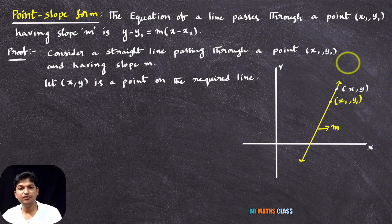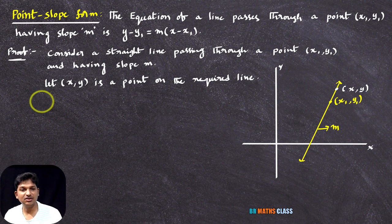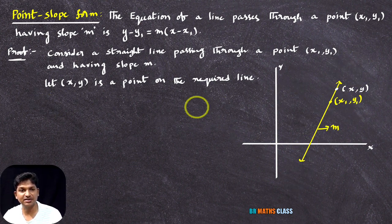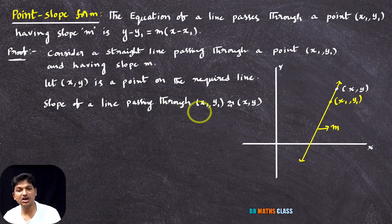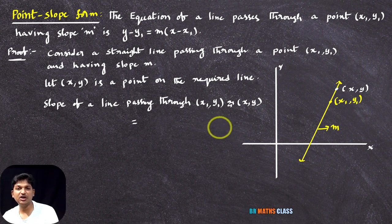Now you can observe, we are trying to find this line equation. This line is passing through two points. If a line passes through two points, we know how to calculate the slope of that line. So I'll calculate the slope of a line passing through these two points — slope of a line passing through x1, y1 and x, y. What is the formula to find slope of a line passing through two points x1, y1 and x2, y2?